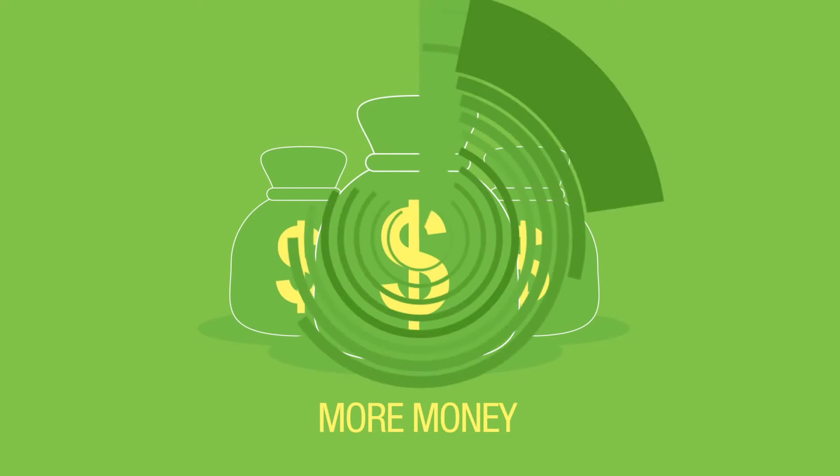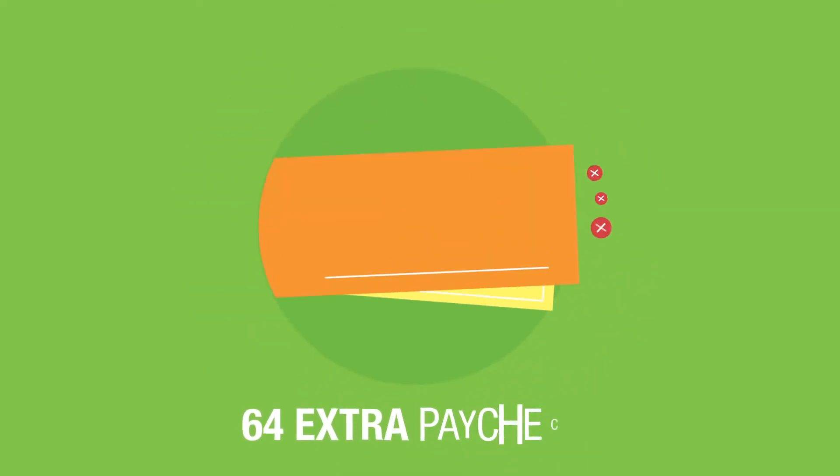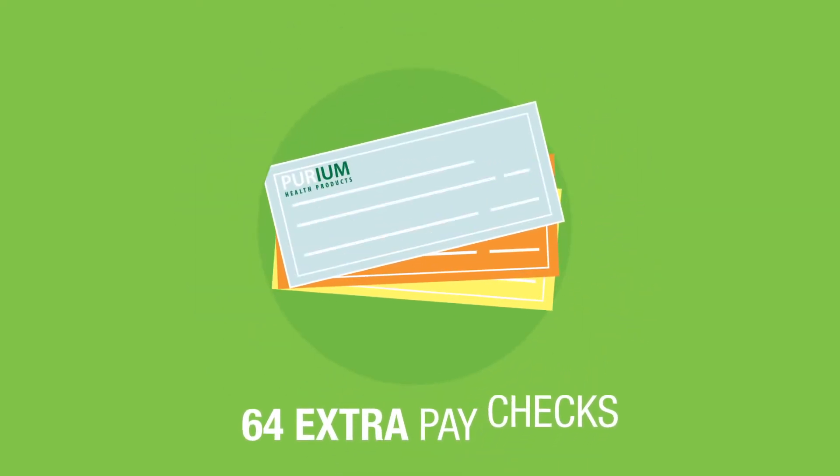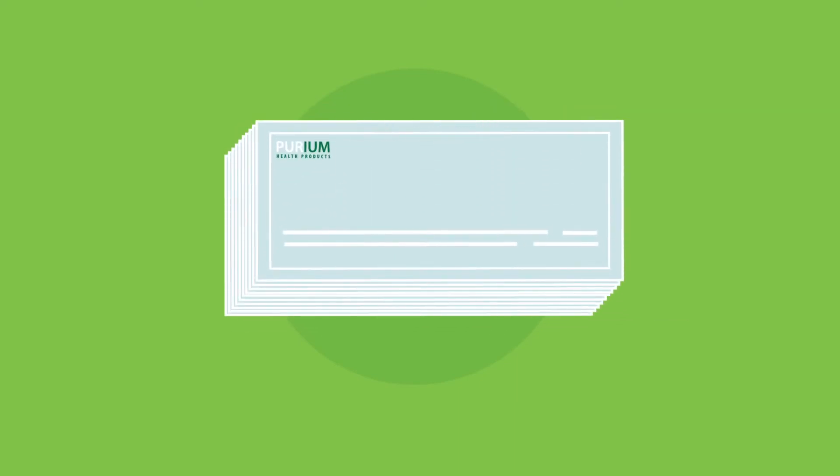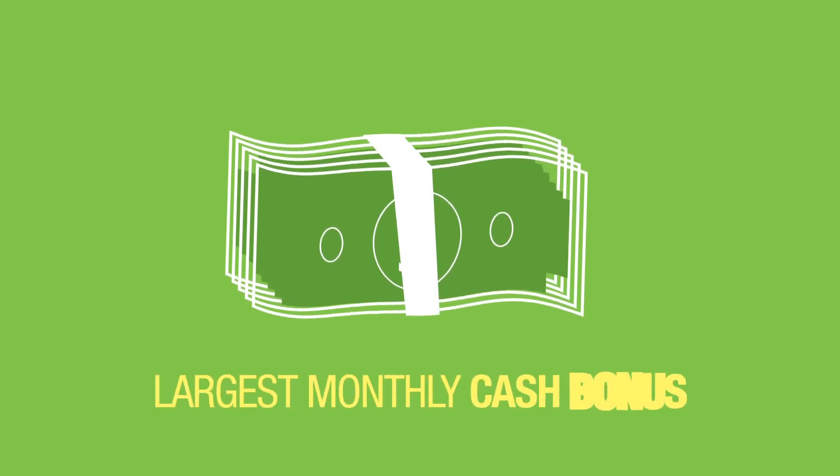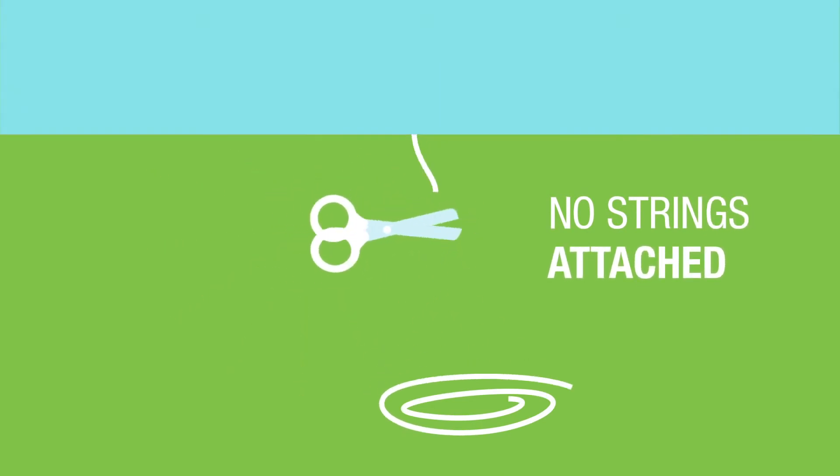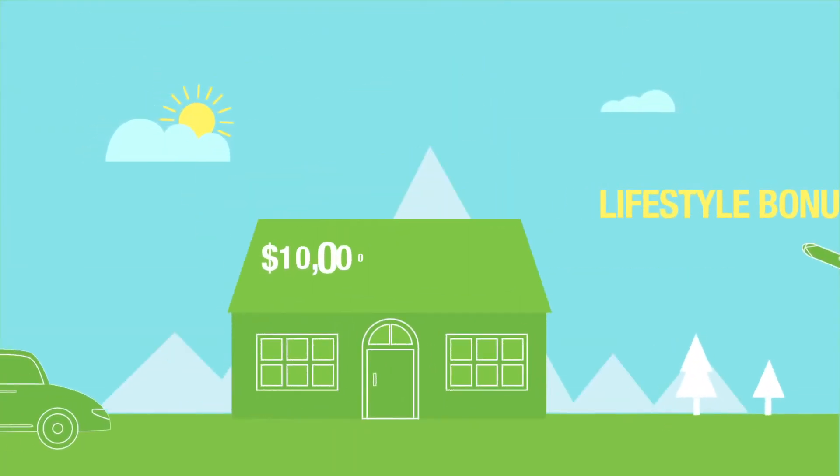And because we manufacture our products, we can be more generous. How would you like 64 extra paychecks this year? Because Purium pays 12 monthly commission checks and 52 weekly checks. Plus, we have the largest monthly cash bonus in the industry, a no-strings-attached, do whatever you want with it lifestyle bonus of up to $10,000 per month in cash.